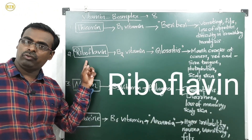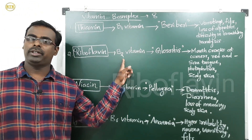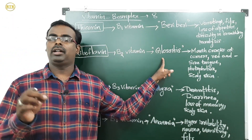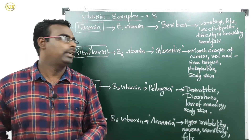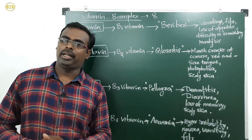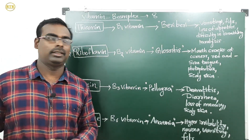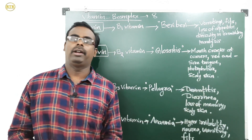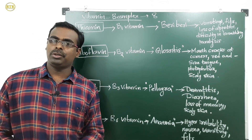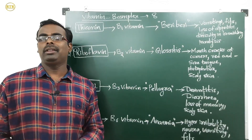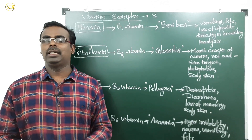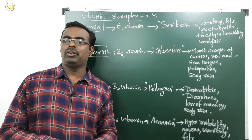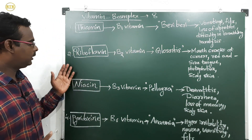The second B complex vitamin is riboflavin, also called B2 vitamin. Deficiency of riboflavin causes glossitis disease. Symptoms of glossitis include mouth cracks at the corners, a red and sore tongue, photophobia — fear of sunlight because skin exposed to sunlight becomes dry and scaly, with the upper layer peeling off.